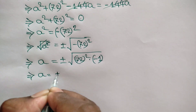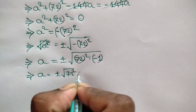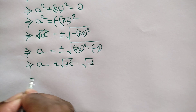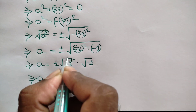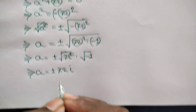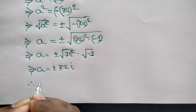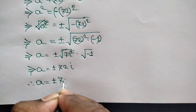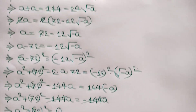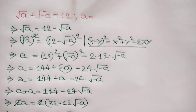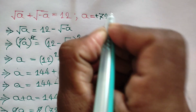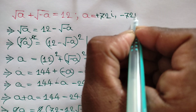We can write this as plus or minus square root of 72 squared times negative 1, which equals plus or minus 72 times square root of negative 1. Since square root of negative 1 is i, the final value of a is plus or minus 72i. Thanks for watching — if you like this video please subscribe to my channel. Bye bye!